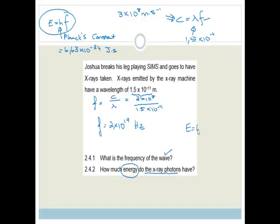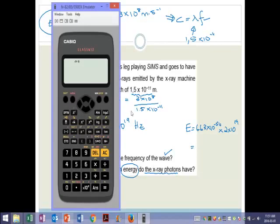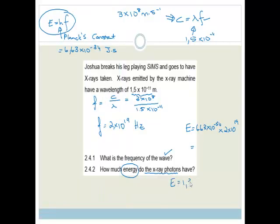We've got E is equal to 6.63 times by 10 to the negative 34 times by 2 times by 10 to the 19. Again, we need our calculator. We've got 6.63 exponent of minus 34 times 2 exponent of 19. And we get 1.326 times by 10 to the negative 14. Now remember, we always do two decimal places. So it becomes 1.33 times 10 to the negative 14. So the energy is 1.33 times by 10 to the negative 14 joules. So that's one of the types of questions you could have in electromagnetic radiation.